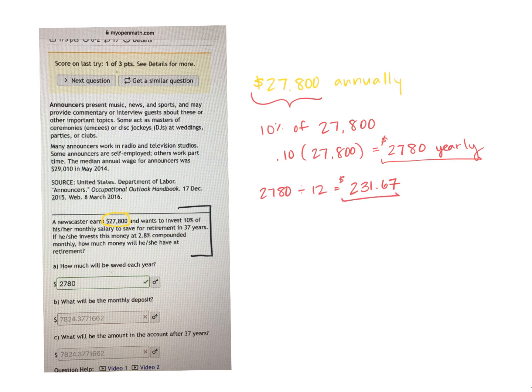So this is going to be the amount monthly that he's going to be able to deposit. So it says that he wants to do this for 37 years, and we are compounding monthly.